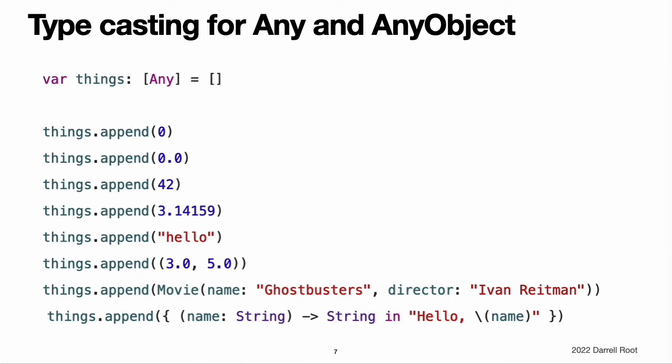Type Casting for Any and AnyObject. Swift provides two special types for working with non-specific types. Any can represent an instance of any type at all, including function types. AnyObject can represent an instance of any class type. Use Any and AnyObject only when you explicitly need the behavior and capabilities they provide. It is always better to be specific about the types you expect to work with in your code.